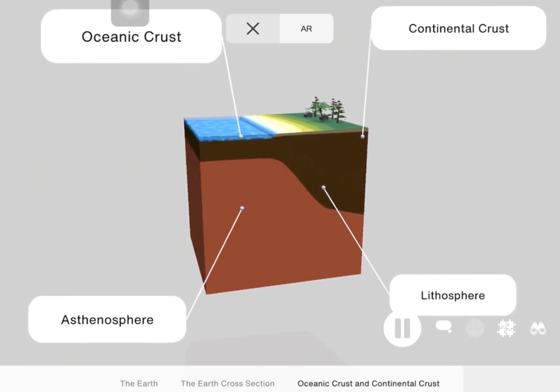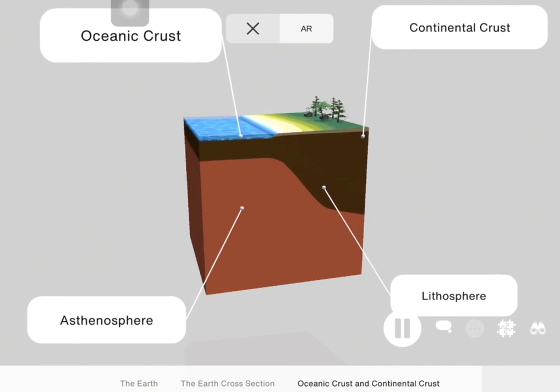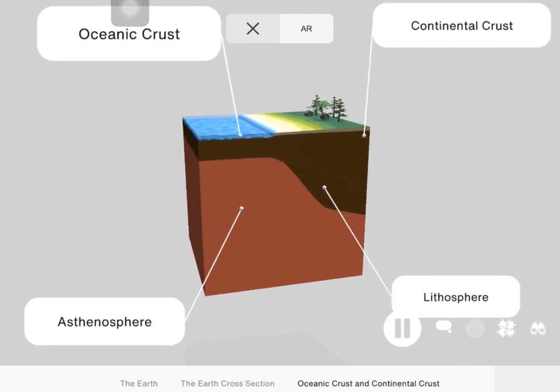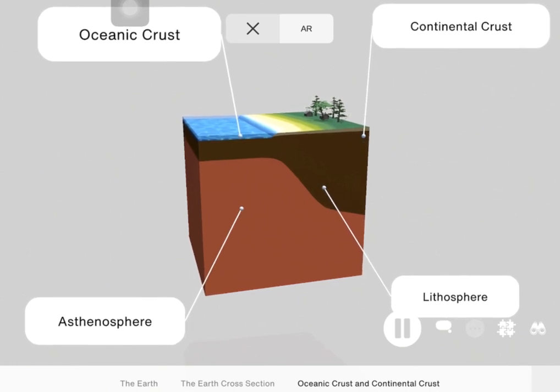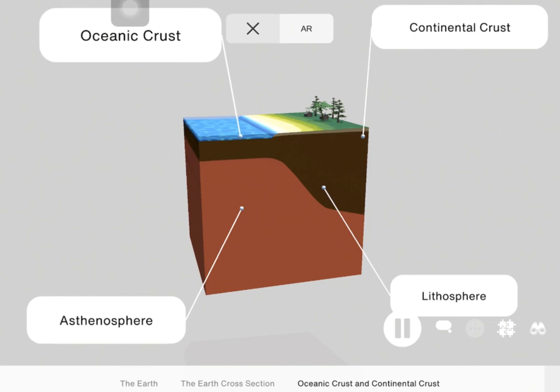Now the continental crust is much thicker when compared to the oceanic crust. It has a thickness ranging from 20 miles, which is about 35 kilometers on the plains, to as much as 40 miles, which is about 70 kilometers, on the very highest mountains around the world.